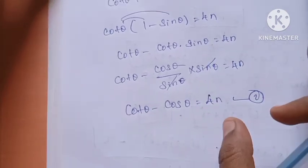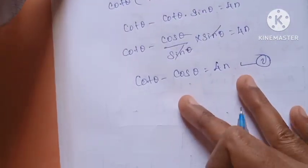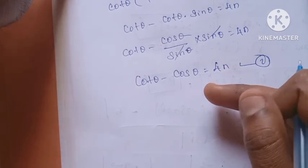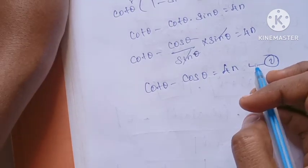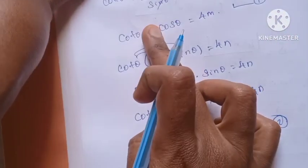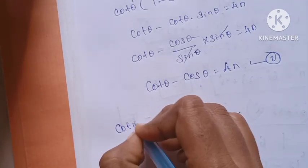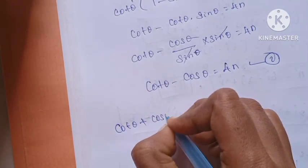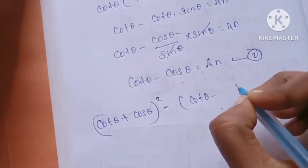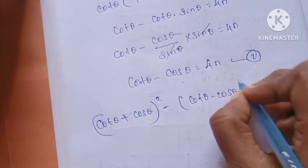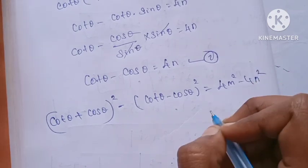Now we have to write m squared minus n squared. So we add equation 1 and equation 2. We get cos theta plus cos theta, the whole square, minus cos theta minus cos theta, the whole square, is equal to 4m squared minus 4n squared.